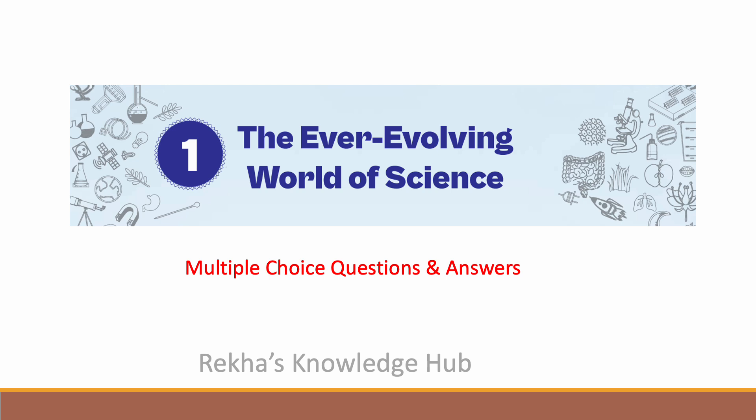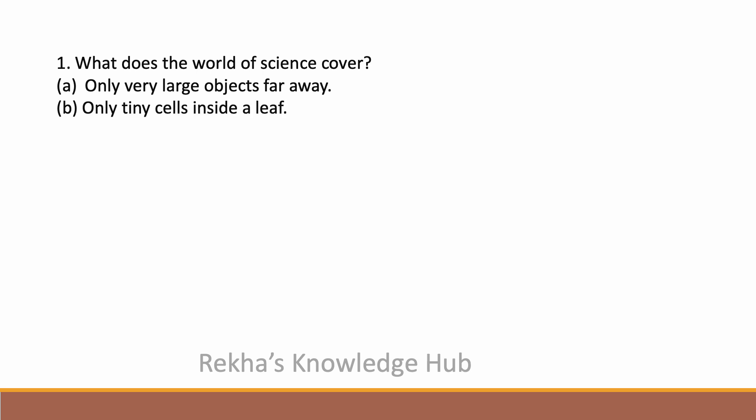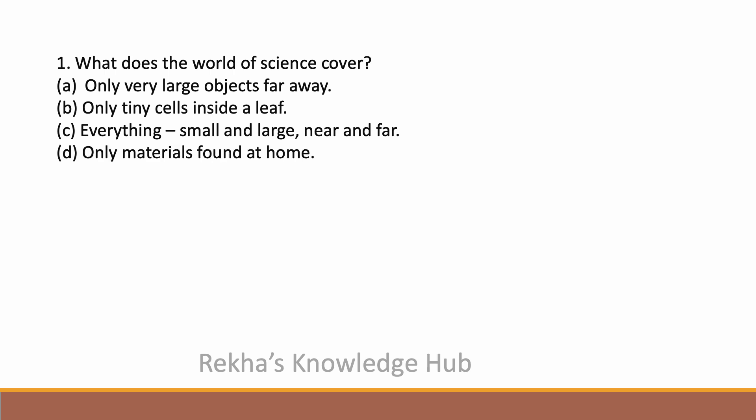Today we will see NCERT class 7 science chapter 1 'The Ever Evolving World of Science' multiple choice questions and answers. What does the world of science cover? Options are: only very large objects far away, only tiny cells inside a leaf, everything small and large near and far, or only materials found at home. The correct answer is option C: everything small and large, near and far.